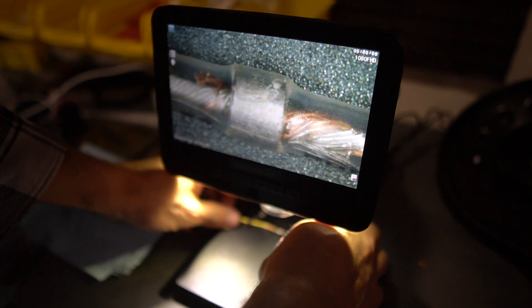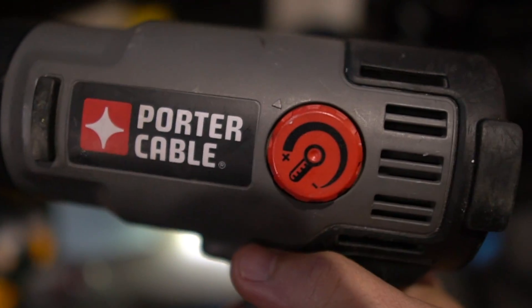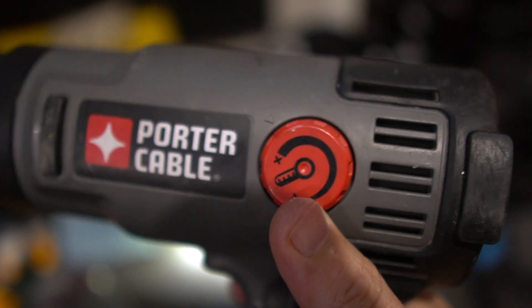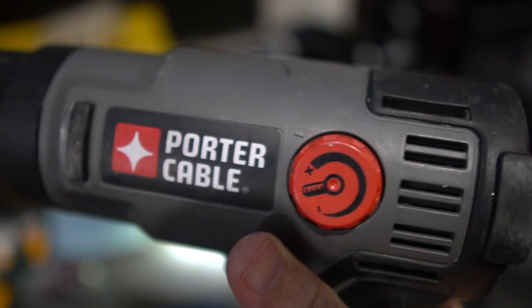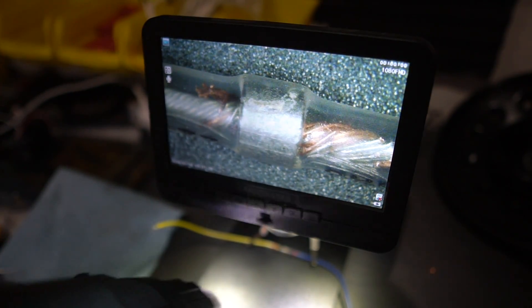And there we can see our solder right in the middle of those wires. Now for this, I'm going to use this heat adjustable Porter Cable heat gun. I can make it a little less intense, but I'm going to go full hot. We are going to solder this connection down right now by giving it some heat.